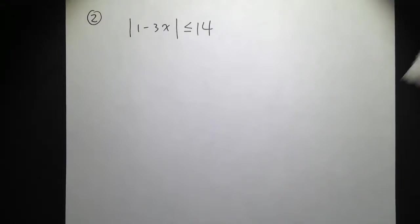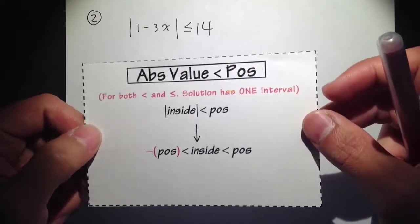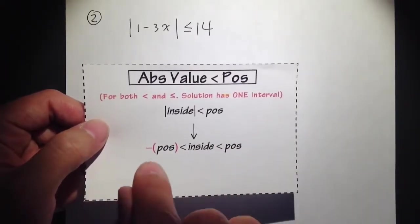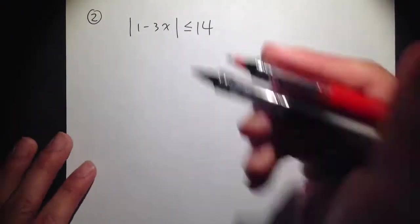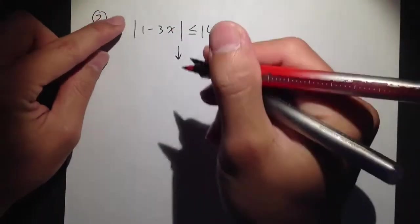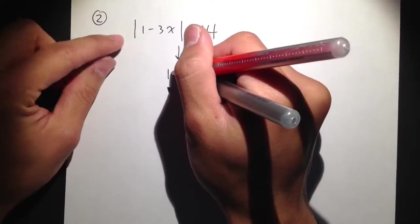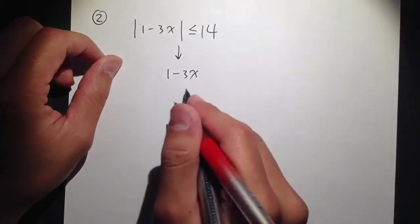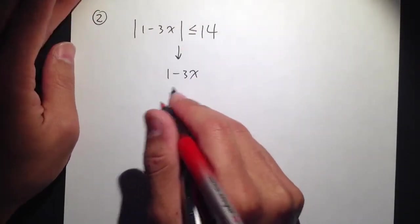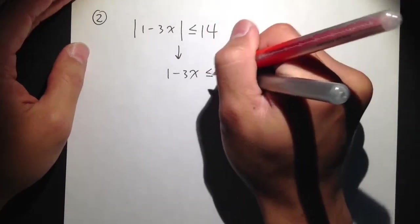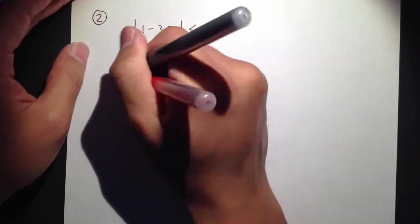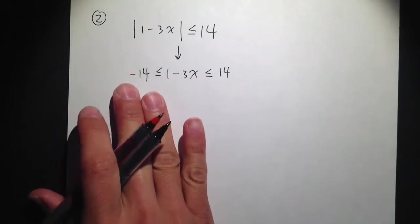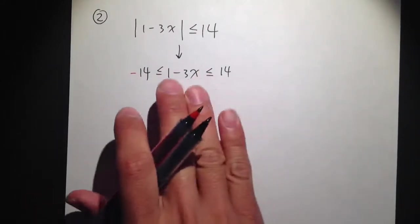With example number two, we are still dealing with this situation and we already have the absolute value isolated. So we can just go ahead and put it inside the middle of negative of that number and positive of that number. This brings down the 1 minus 3x — the inside does not change, so just 1 minus 3x — in the middle of negative 14 and positive 14. Keep in mind: always the negative number on the left, middle, then right.